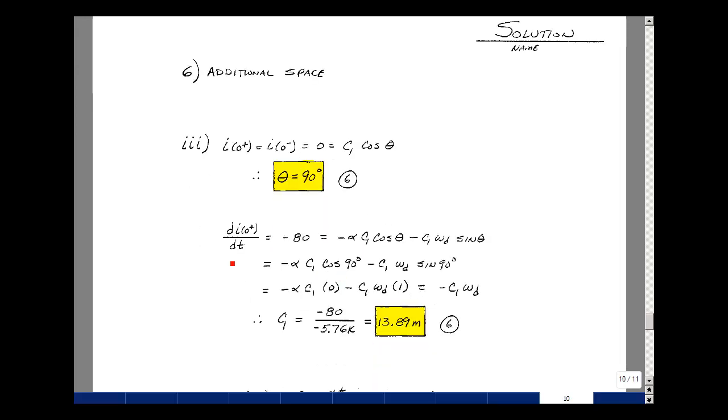I found that the derivative of the current at t equals zero plus with respect to t was equal to minus 80 from the last page. And from our formula sheet, that has to equal minus alpha C1 cosine of theta minus C1 omega D times the sine of theta. The cosine of 90 is zero, so this term drops out. The sine of 90 is equal to one, so I just have minus C1 omega D times one. And that has to equal this minus 80 here. So we can solve for C1. So C1 is going to be equal to minus omega D divided into minus 80. So those minus signs cancel. Omega D was 5.76K, and I get 13.89 milli. That was worth six points, no partial credit.